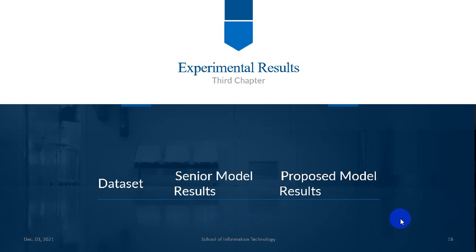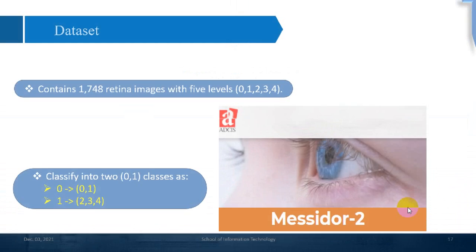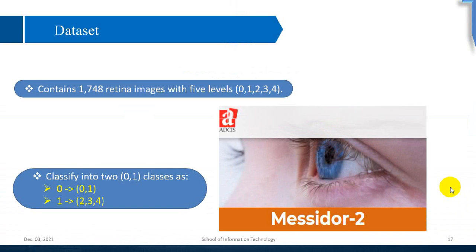The dataset used for this research was MESSIDOR-2, which consists of 1,748 images with five severity levels: 0, 1, 2, 3, and 4. For our research, we classified these into two classes — class 0 (levels 0 and 1 combined) and class 1 (levels 2, 3, and 4 combined).